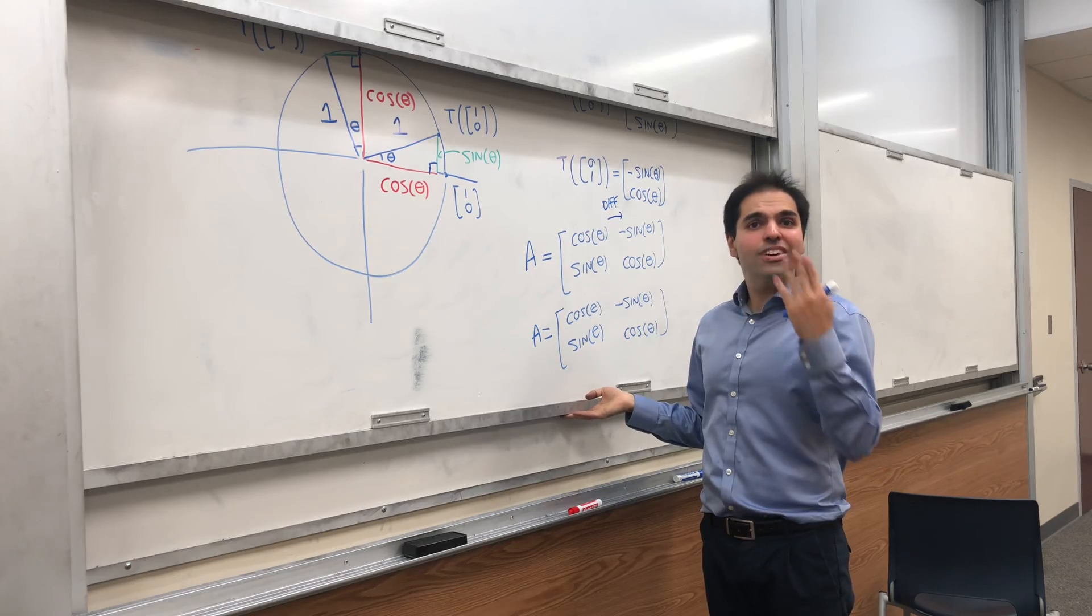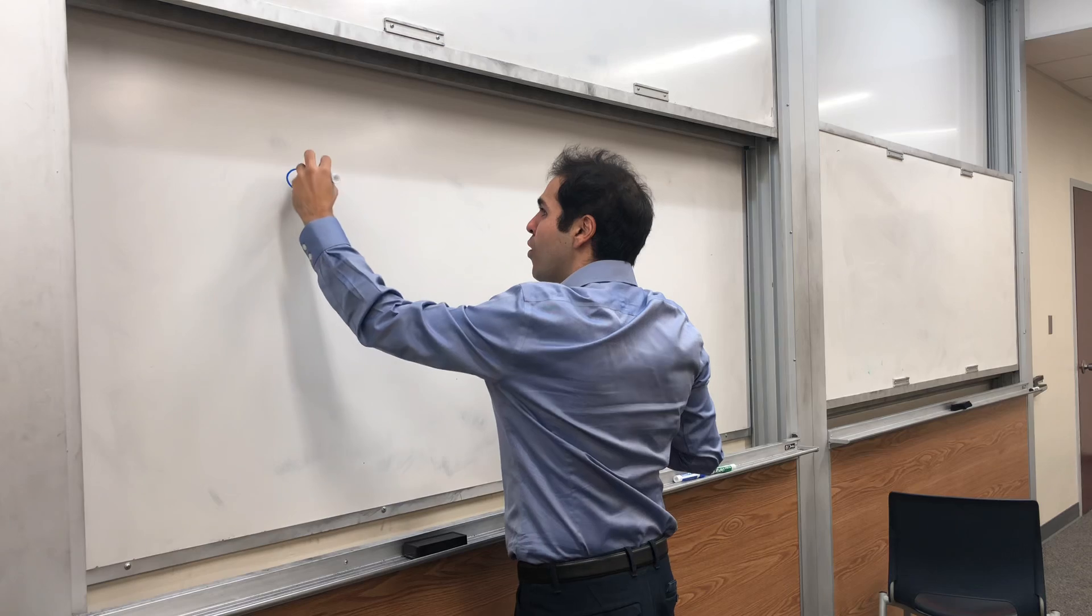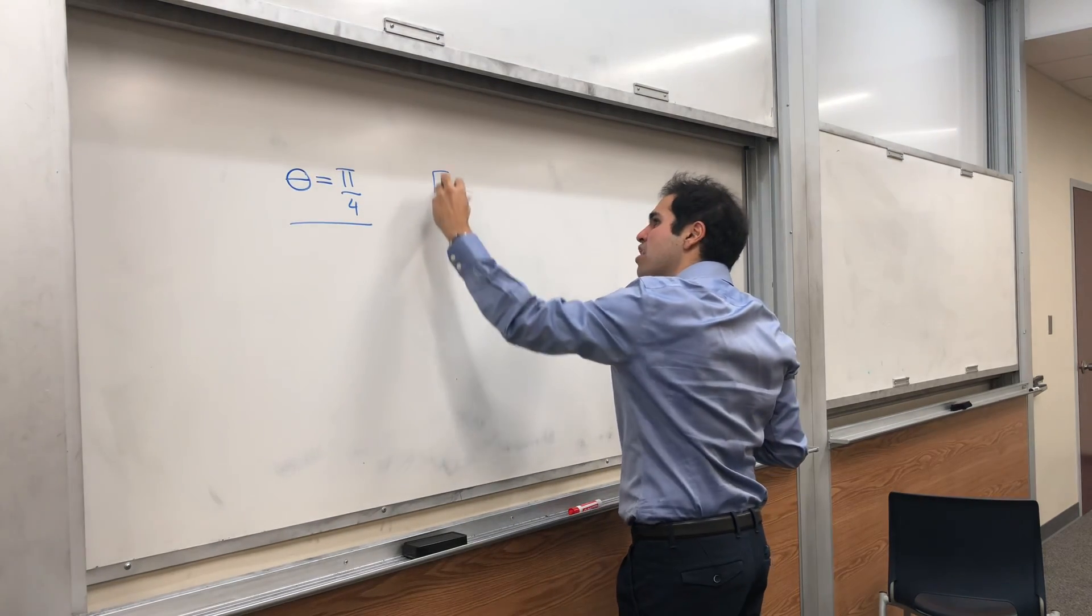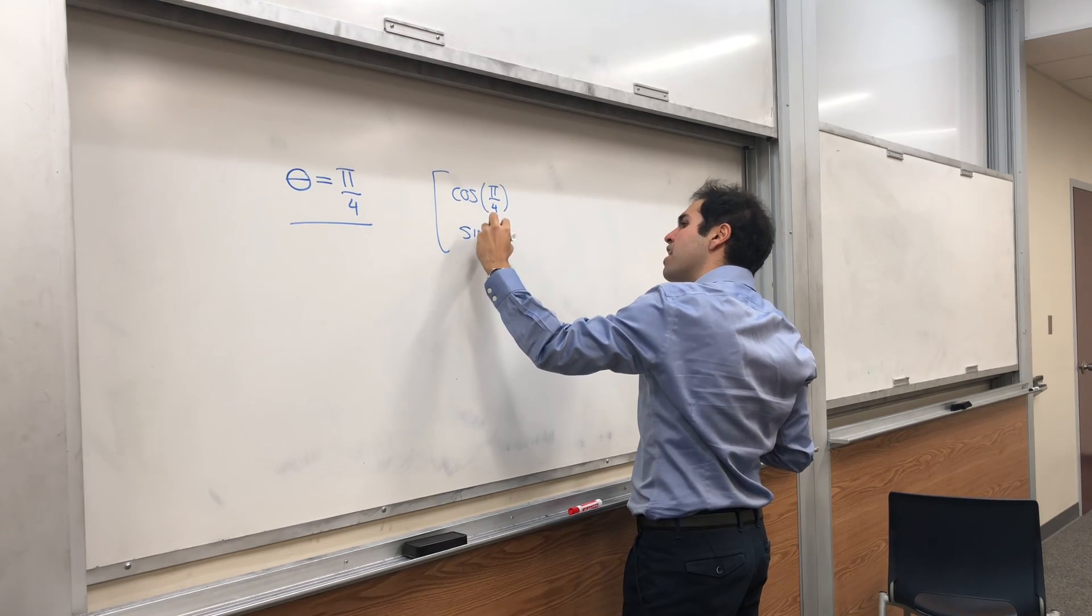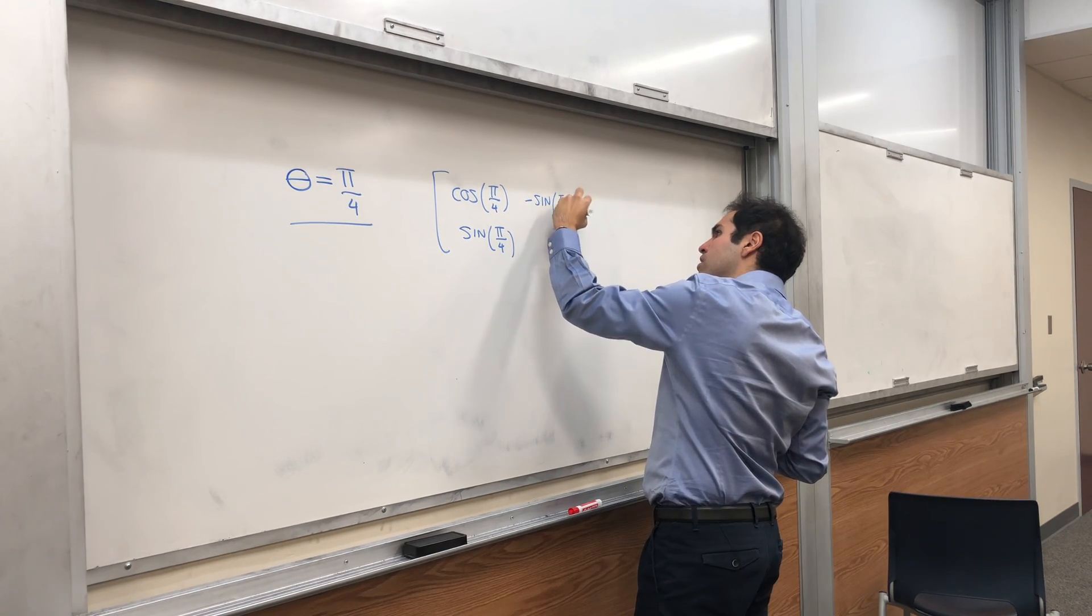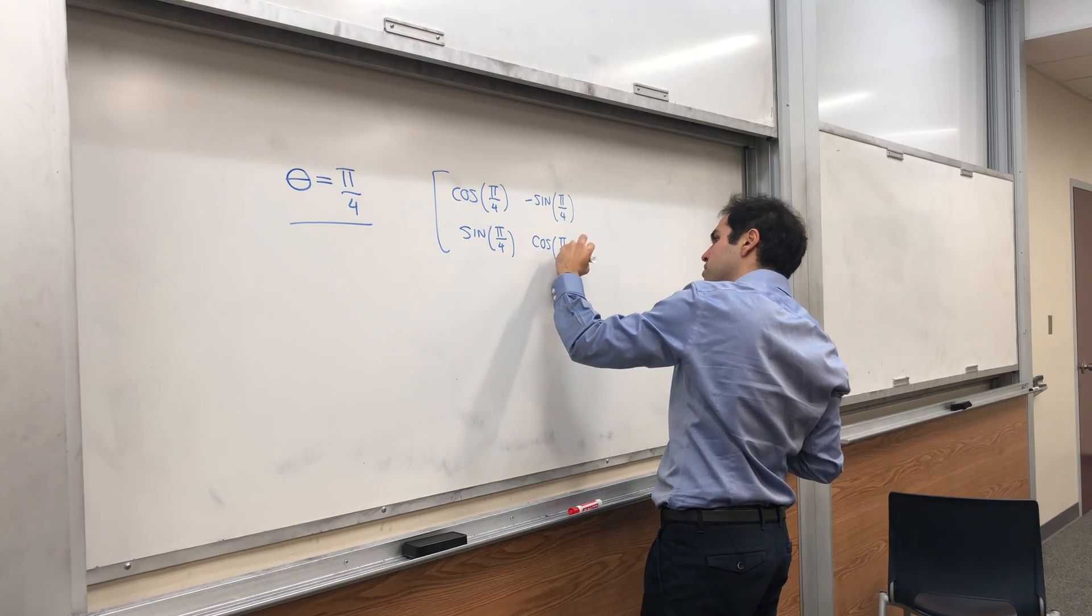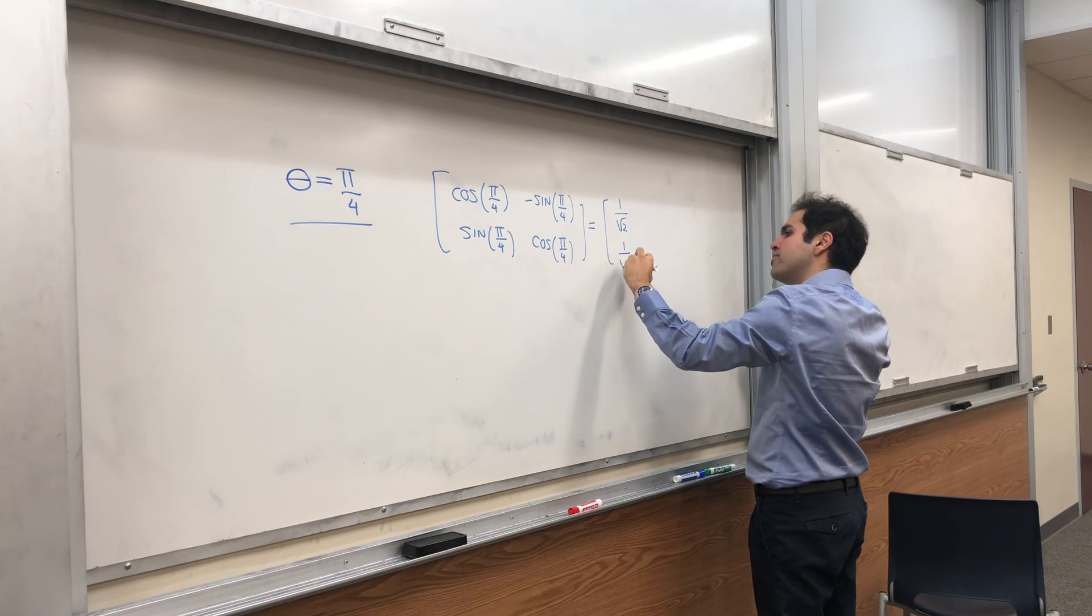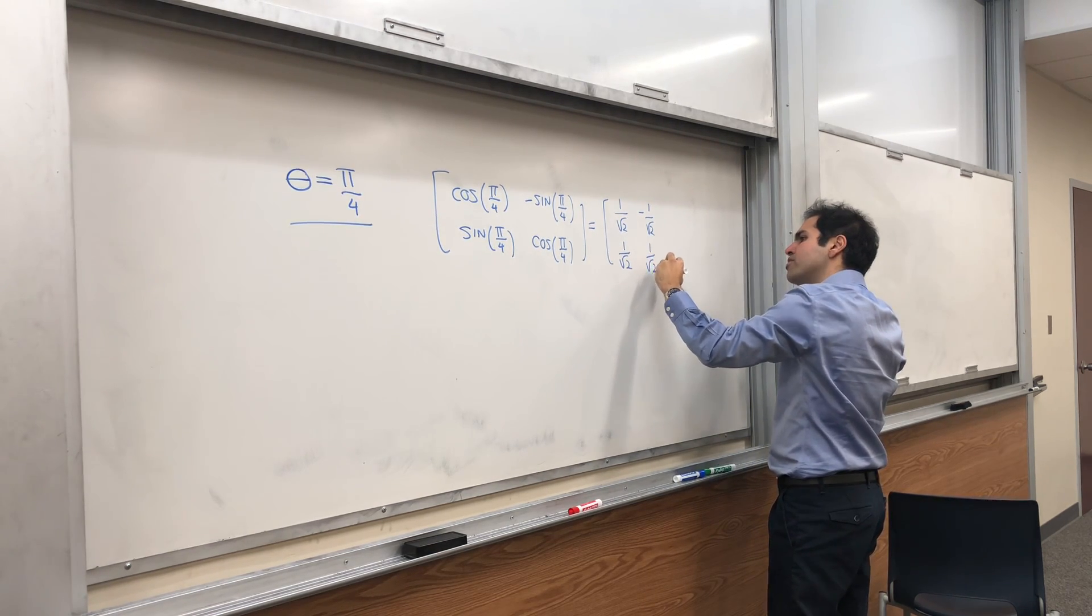Lastly, let me just give you a concrete application. So what if theta is pi over 4? So what is rotation by pi over 4? Technically, cosine of pi over 4, sine of pi over 4. Again, minus sine of pi over 4, and cosine of pi over 4. That just becomes 1 over square root of 2, 1 over square root of 2, minus 1 over square root of 2, 1 over square root of 2.